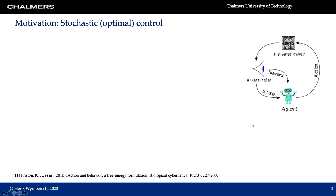The motivation for this work lies in the area of stochastic optimal control. The picture on the right shows an agent which can act on its environment, infers the state of the environment through sensors and observations, and collects rewards. Using a control theoretic notation we have the following ingredients: the state x, which can contain the state of the agent and the world; the control or action u; the observations y; and finally the goals.